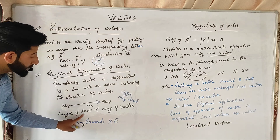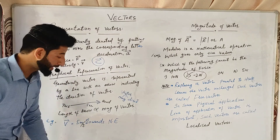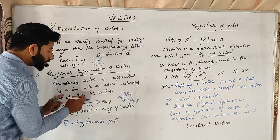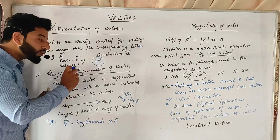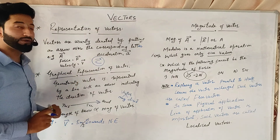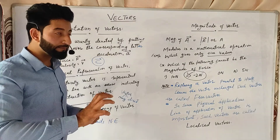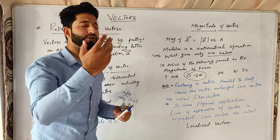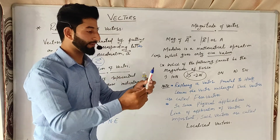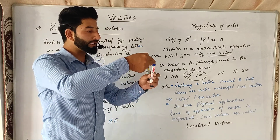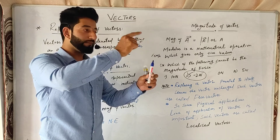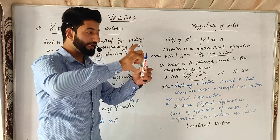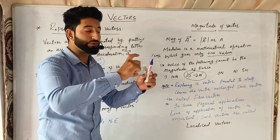So we can say the length of the arrow is directly proportional to the magnitude of the vector. That means jitni length ki line hogi, utna us vector ka magnitude hoga, aur joh uski direction hogi, that will be the direction of the vector. For example, to represent a 5N force towards the north, we draw a 5 cm arrow in that direction. This arrow represents the direction of the force towards north, and the length represents the magnitude.